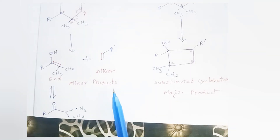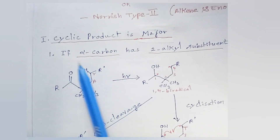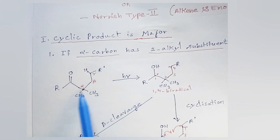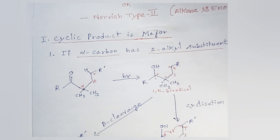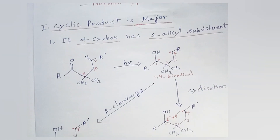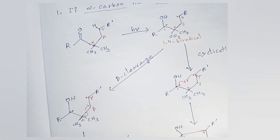This enol can tautomerize and give a ketone. So if the alpha carbon has two alkyl radicals, it will give a cyclic product as the major product.